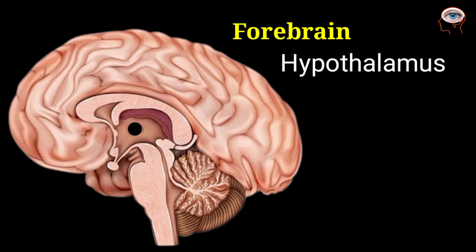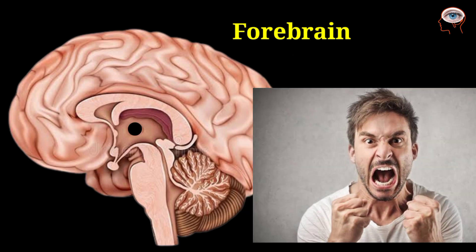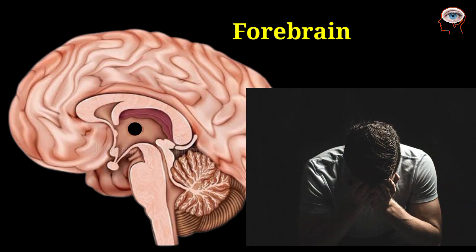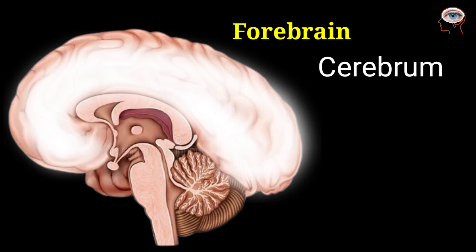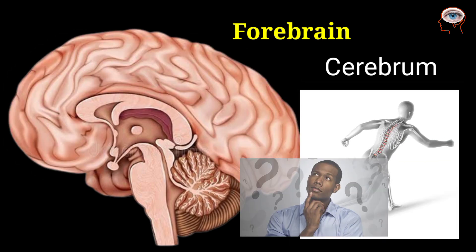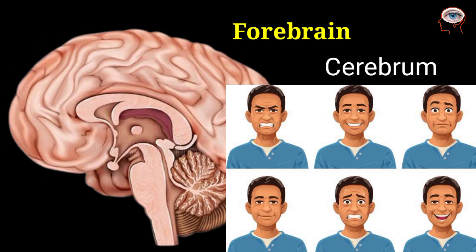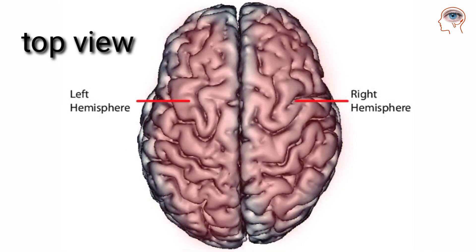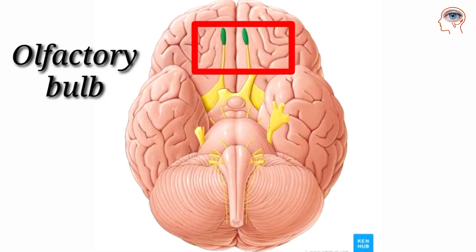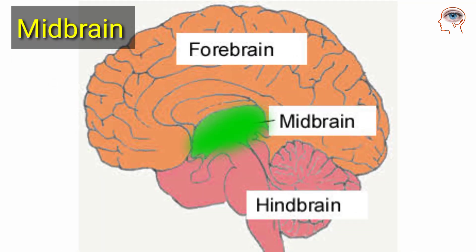The hypothalamus lies below the thalamus. It controls many secretions of the pituitary gland and regulates feelings such as rage, pain, pressure, and sorrow. The cerebrum is the largest part of the brain and controls skeletal muscles, thinking, intelligence, and emotions. It is divided into two cerebral hemispheres. The interior parts of the cerebral hemispheres are called the olfactory bulbs.